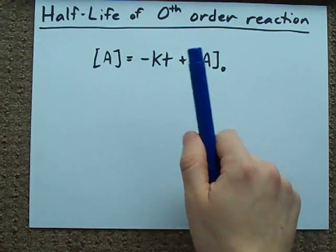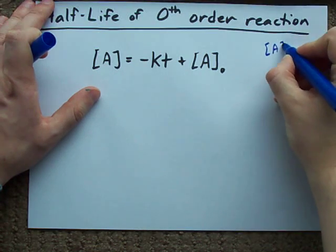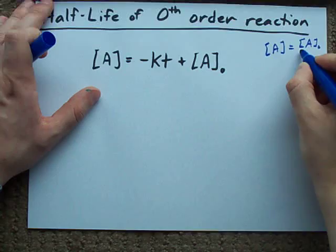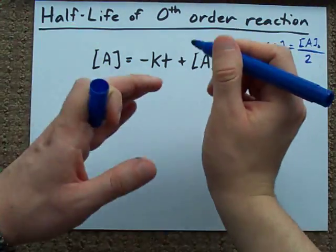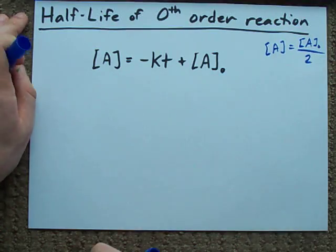How do you find the half-life for a zero-th order reaction? By keeping in mind that after one half-life, the concentration inside the solution or reaction vessel will be the initial concentration cut in half, or divided by two.